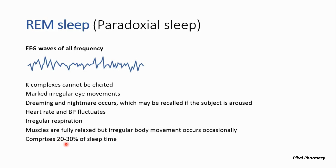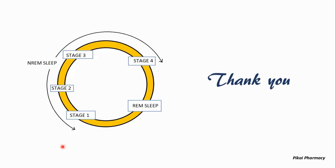During REM sleep, the muscles are fully relaxed but sometimes irregular movement occurs. REM sleep comprises 20 to 30 percent of total sleep time. The sleep cycle then repeats in a cyclic order. Thanks for watching — stay healthy!